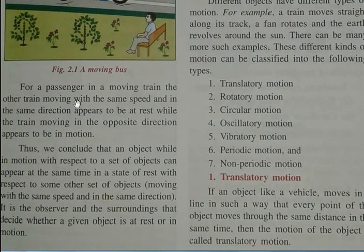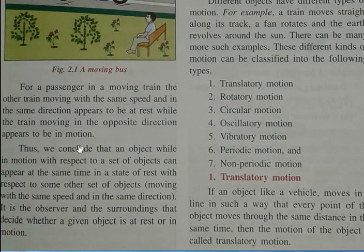For a passenger in a moving train, another train moving with the same speed and in the same direction appears to be at rest, while a train moving in the opposite direction appears to be in motion.